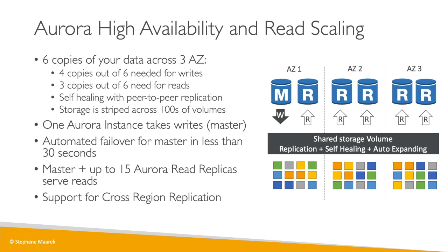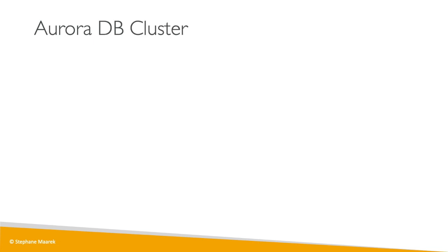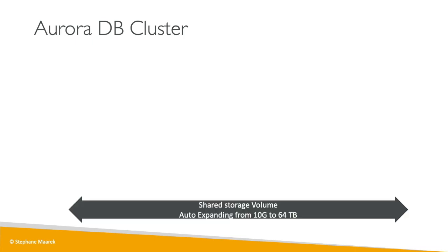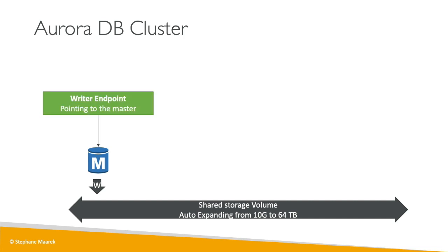Let's look at how Aurora works as a cluster — specifically how clients interface with all these instances. There is a shared storage volume that auto-expands from 10 gigabytes to 64 terabytes. The master is the only instance that writes to storage. Because the master can change during failover, Aurora provides a writer endpoint — a DNS name that always points to the master. Even if the master fails over, your client still talks to the writer endpoint and is automatically redirected to the right instance.